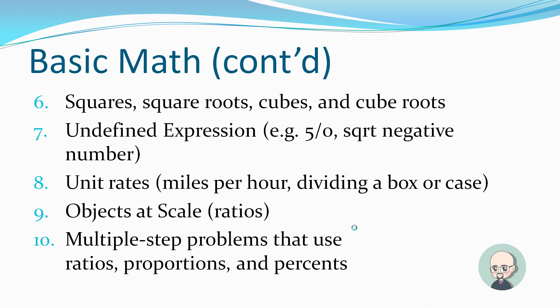Undefined expressions, like five over zero, square root of negative numbers. We're not going to go into this much, and this doesn't have a lot on the exam, but basically all you need to know is if something's divided by zero, that doesn't happen. You can't do that. That's called undefined, and that's going to give you the undefined answer. If you take a square root of a negative number, it's going to give you undefined. Basically, it's bad, and the answer will be undefined if you wind up with one of those things. You should always check your work if you get one of those answers to make sure that it's actually undefined. Unit rates, that's miles per hour, dividing a box or a case. These are a lot of word problems will involve unit rates. Objects at scale, these are ratios. Multiple step problems that use ratios, proportions, and percents. These will use several of these things I've mentioned previous in this domain.